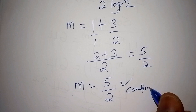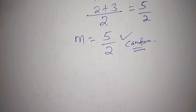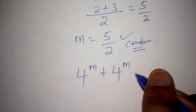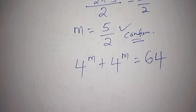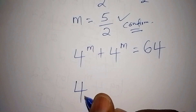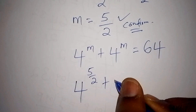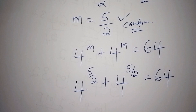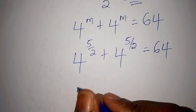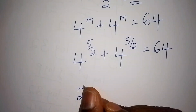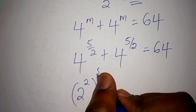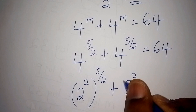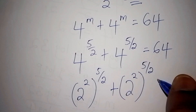Let us now confirm if this answer is correct. Our original problem was 4 to the power of m plus 4 to the power of m equals 64. Substituting m equals 5 over 2: 4 to the power of 5/2 plus 4 to the power of 5/2 equals 64. We rewrite 4 as 2 to the power of 2, so we have 2 to the power of 2, raised to the power of 5/2, plus the same expression, equals 64.